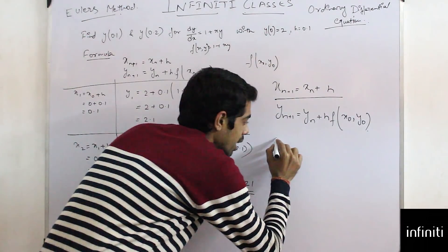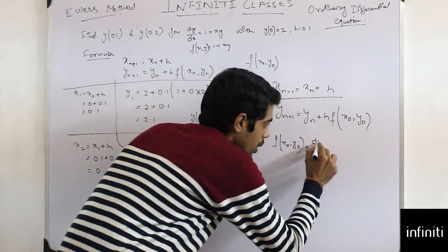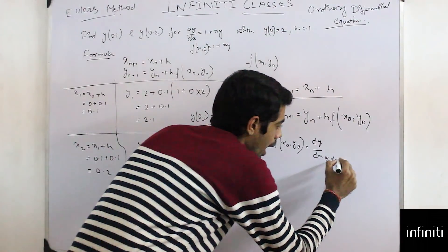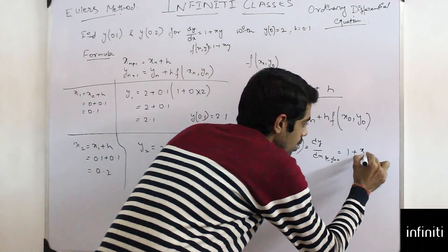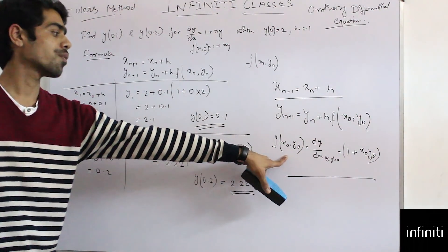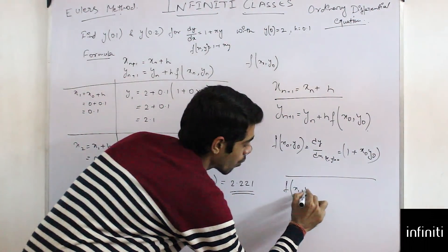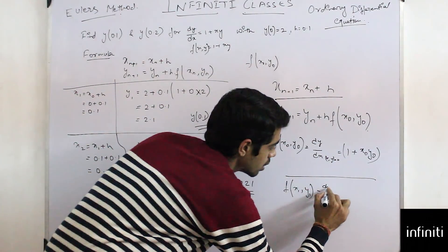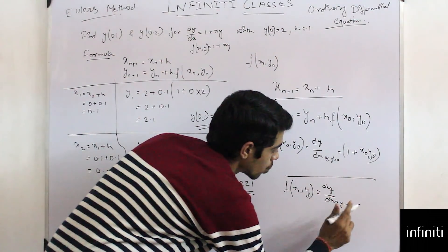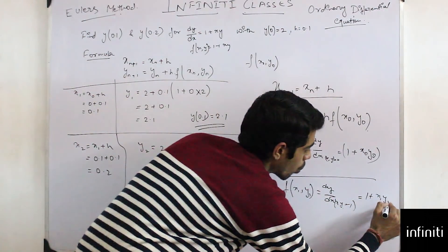Here x_0 and y_0 are our initial values. So f(x_0, y_0) = dy/dx at (x_0, y_0) = 1 + x_0·y_0. Similarly, f(x_1, y_1) = dy/dx at (x_1, y_1) = 1 + x_1·y_1.